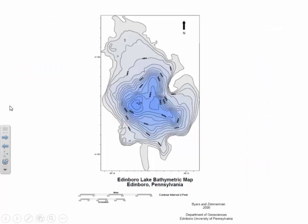This is a bathymetric map that shows the current depth of Edinburgh Lake. You can get a pretty good idea of the original size of the glacial kettle lake by looking at the blue shaded areas on the map. The total depth of the lake today is about 30 feet. The level of the lake has been raised about 10 feet by the dam, so all the gray areas around the blue area representing the old kettle lake are areas that have been flooded due to the construction of the dam.